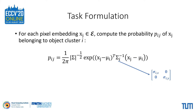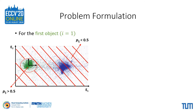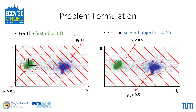To supervise the network training, we compute the probability of every pixel embedding belonging to a given object cluster. For pixels belonging to the object, we enforce the probability to be greater than 0.5, and for all the others, we enforce the probability to be less than 0.5. This can be visualized here: when probabilities are computed with respect to the green object cluster, all the green pixel embeddings have a high probability, and likewise the same is true when the blue object cluster is considered.